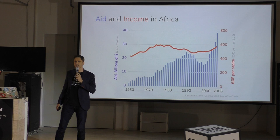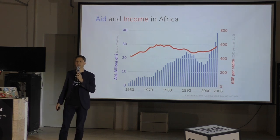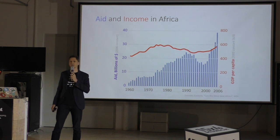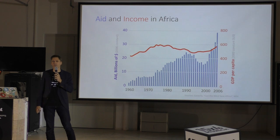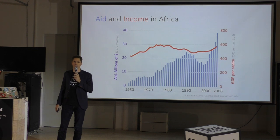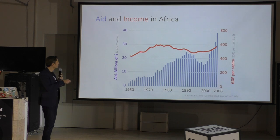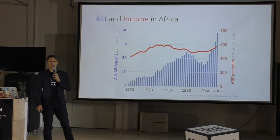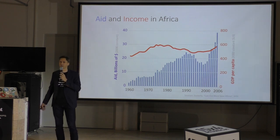But there is a discrepancy. As you can see in this chart, aid money has increased massively in the last 50 to 60 years. In 1960, it was roughly 3 to 4 billion US dollars, and it raised to almost 40 billion in 2006. Today's numbers are even higher. And at the same time, the GDP per capita of African countries has stayed more or less on the same level, fluctuating between 400 and 600 US dollars.